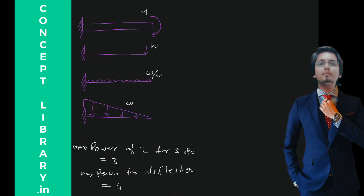Let's start this trick — I am saying this is the father of all tricks. First, keep in mind: if we are finding slope, the maximum power of L will not go beyond 3, and the maximum power of deflection will not go beyond 4. Let's see how to use this.